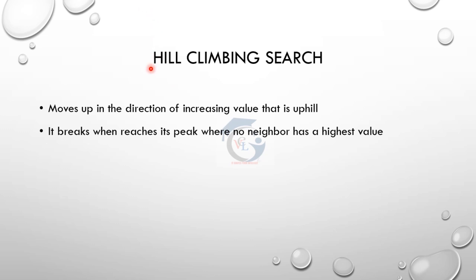In hill climbing search, we move in the upward direction. If the value is a minimum value or increasing value, we reduce the cost. We further expand the node to the child node. If there is a minimum cost, it will be added to the child node. If the neighbor is not the highest value, finally this is the minimum value. If there is a hill climbing search, we will break.